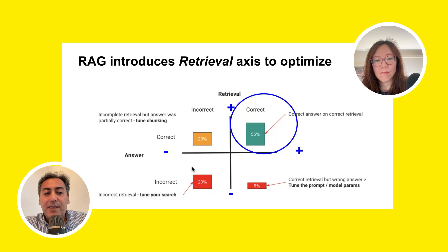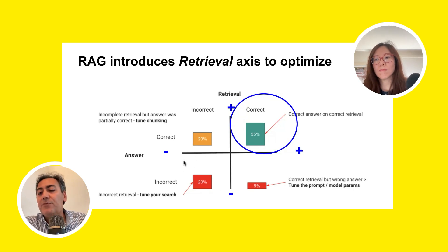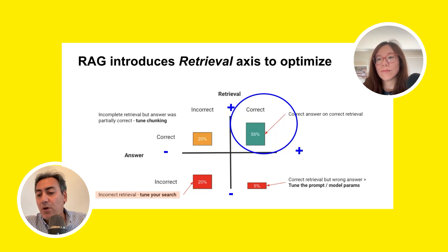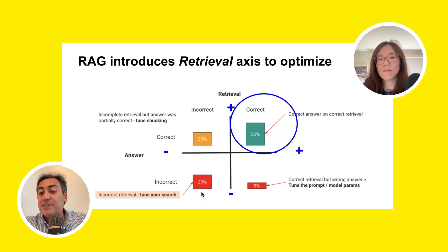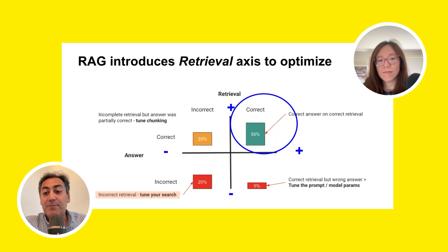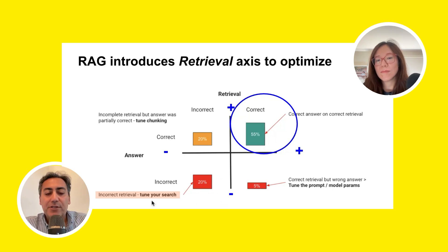The bottom-left is when the retrieval is completely wrong. If the retrieval is wrong, the LLM will anyway produce the wrong answer. So here we have to work on the search — we have to optimize why the retrieval is wrong. Is it because of the search algorithm? We have to tune our search.